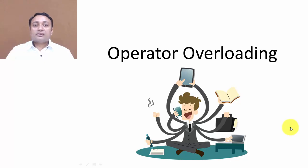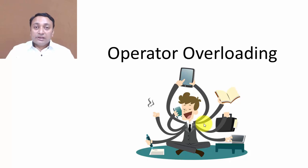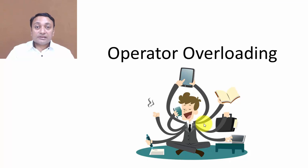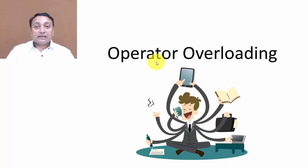Hello everyone. In this lecture we are going to discuss the concept of operator overloading. In this image you can observe that more than one task is carried out by a single person. We already know the concept of function overloading, where we write more than one function definition under a single function name — that feature in C++ is known as polymorphism, that is one name and many forms. Same way, we can use a single operator for multiple purposes, and that is another example of polymorphism called operator overloading.